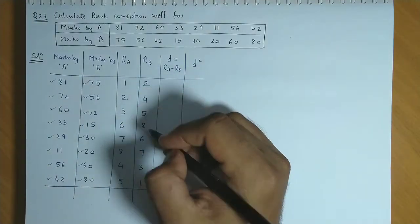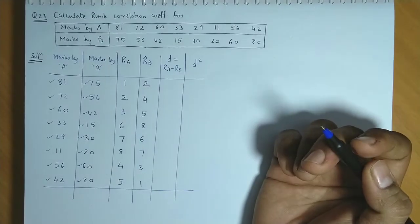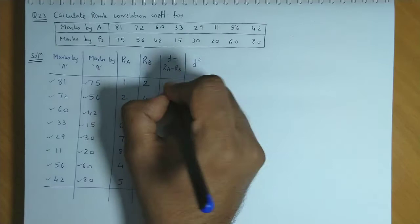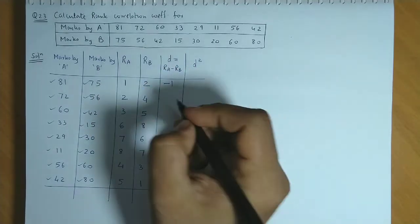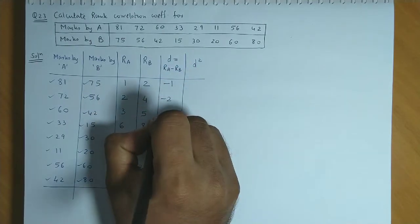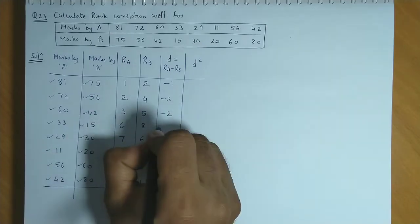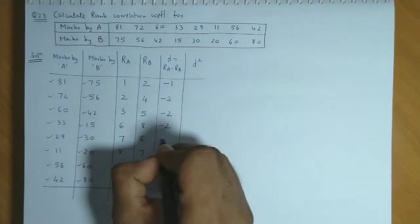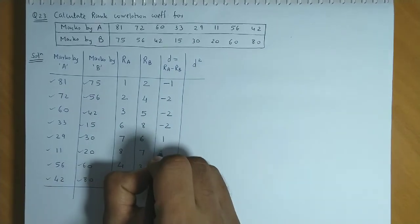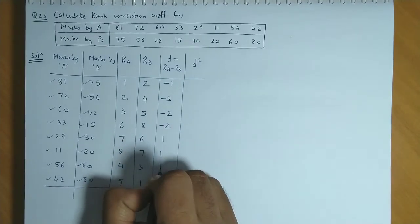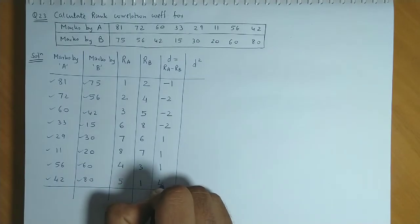Now RA and RB we have found. Now we calculate the difference. 1 minus 2, that is minus 1. Then difference is minus 2, again minus 2, minus 2. This difference is 1, 1, this difference is 1, and 5 minus 1, that is 4.